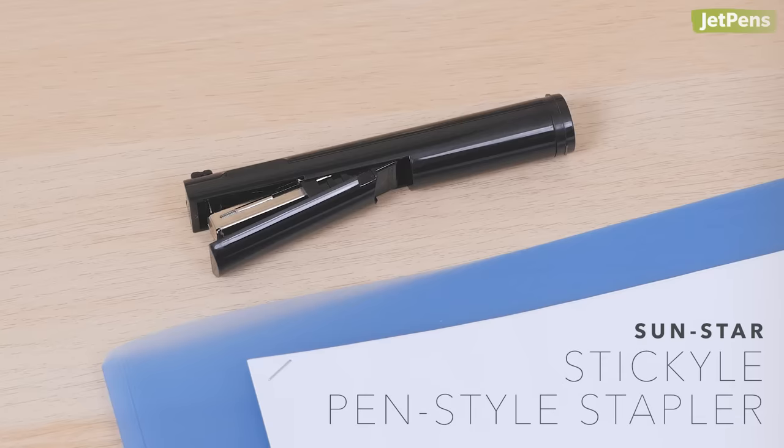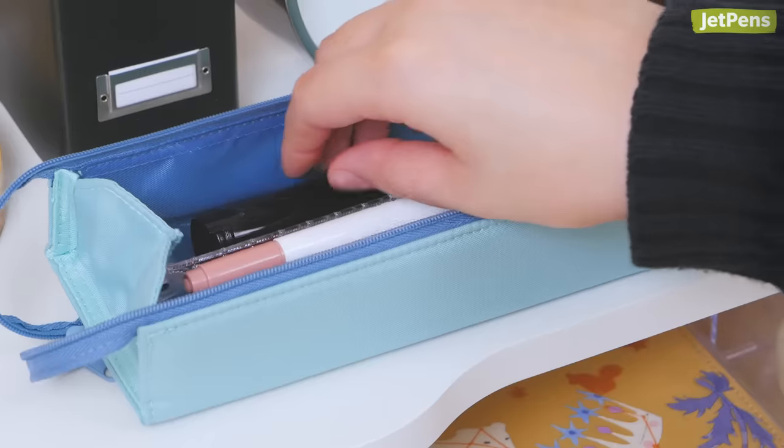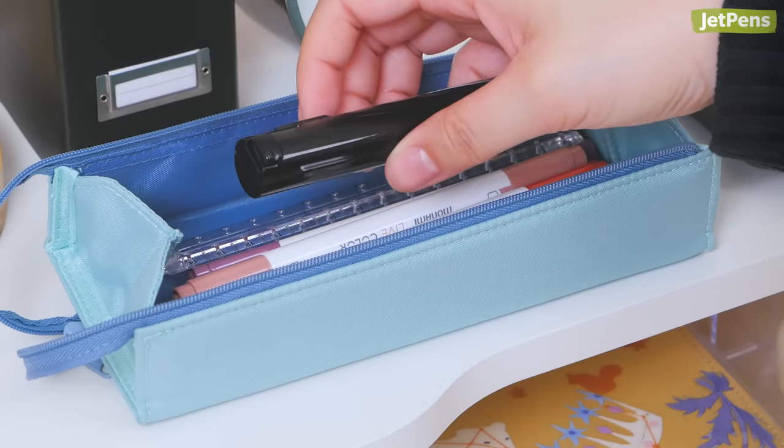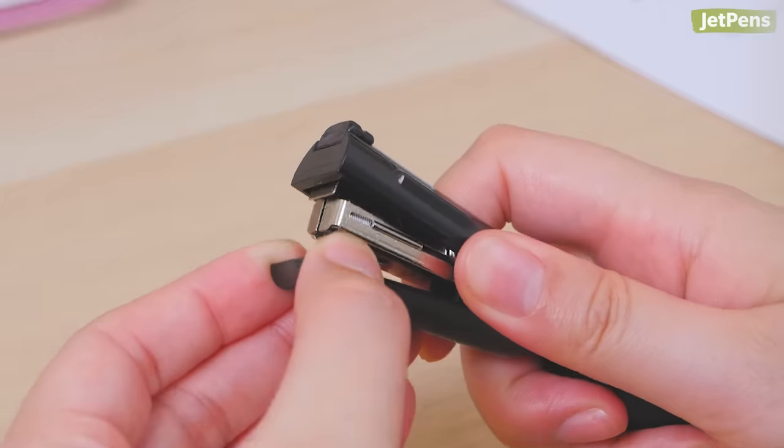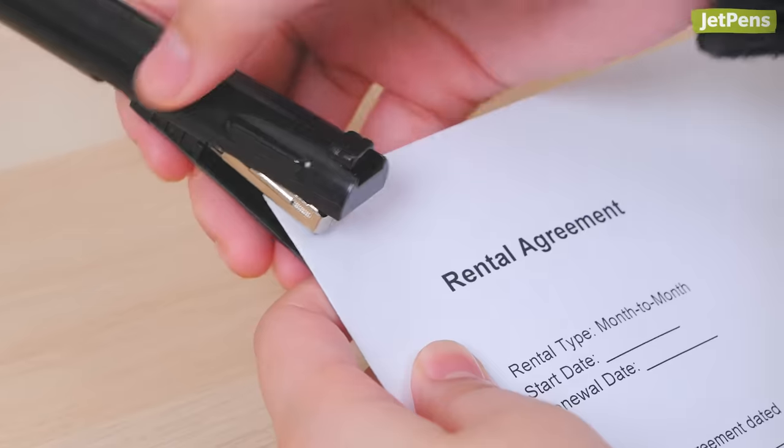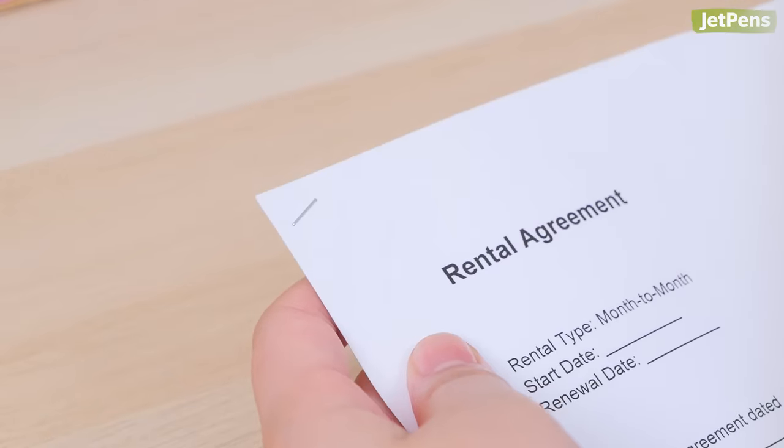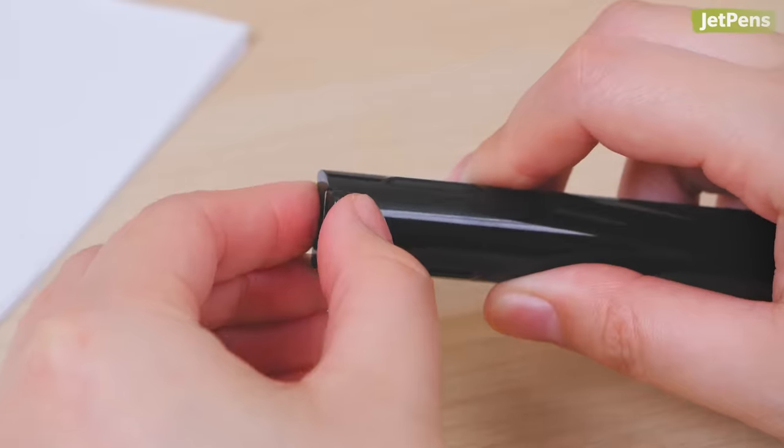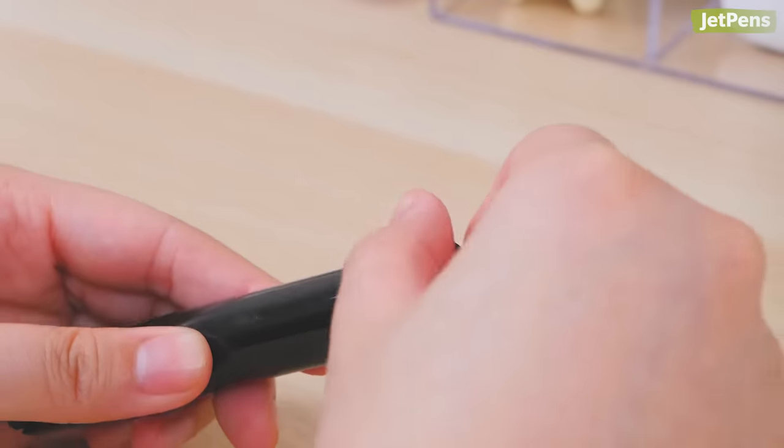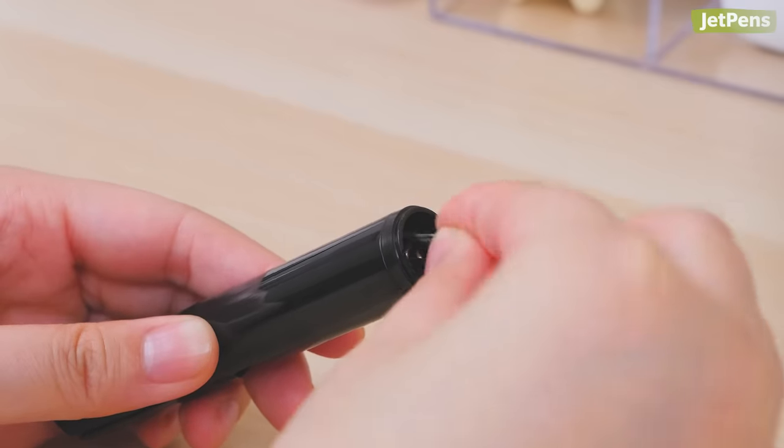The Sun Star Sticule is a stapler in disguise. Its cylindrical shape takes up less space in a bag, but it doesn't lose any of its functions. Just open the lip, slide the top switch down, then close the lip. It can staple up to 10 sheets at once. When you're finished using it, pull down the lip and slide the switch back up to close it. The end of the stapler also has a mini storage compartment that can hold extra staples or paper clips.